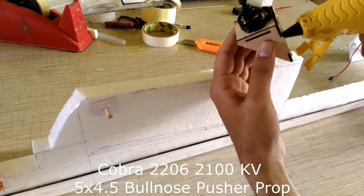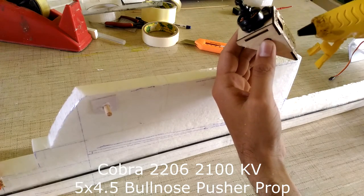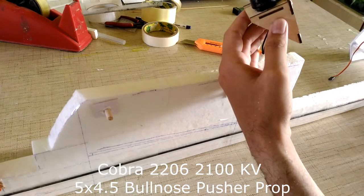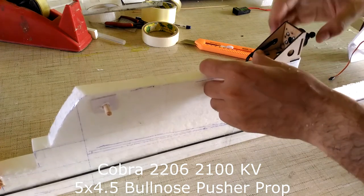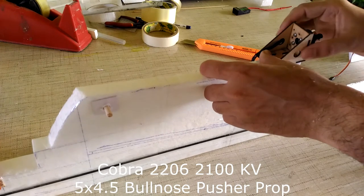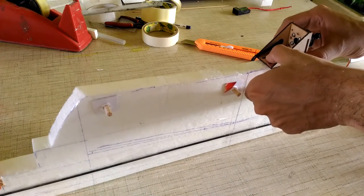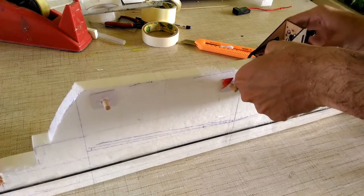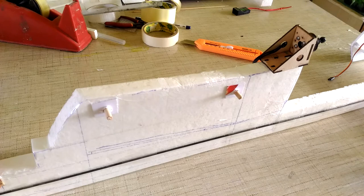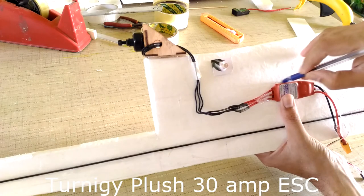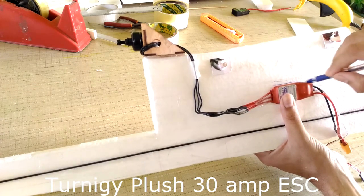Here I am putting some glue on the motor mount. This is the pusher motor setup. Now to fix the ESC I am going to use zip ties so I am just marking over there.